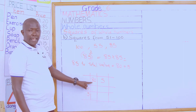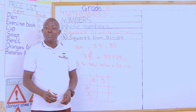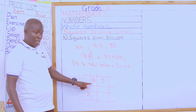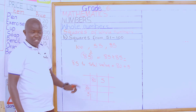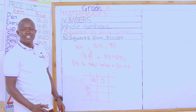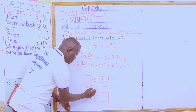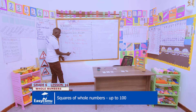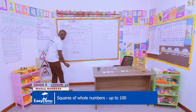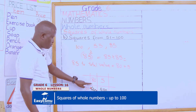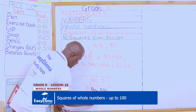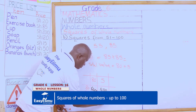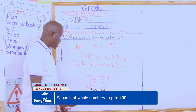So 80 multiplied by 80: remember from grade 5, you multiply 8 by 8 then add the zeros. Using the multiplication table, 8 times 8 is 64, so we get 6400. Then 80 multiplied by 5 gives 40, plus the zero makes 400. Likewise, 5 multiplied by 80 also gives 400, and 5 multiplied by 5 gives 25.